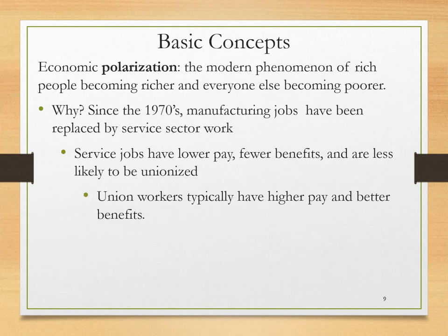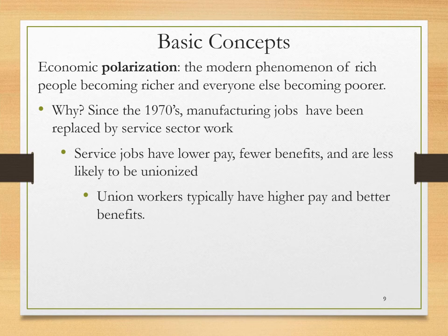Economic polarization is the modern phenomenon of rich people becoming richer and everyone else becoming poorer. This was addressed by Marx in the mid-1800s, but we have seen this process get stronger since the 1970s. Since then, manufacturing jobs in the United States have been increasingly replaced by service sector work, which has lower pay, fewer benefits, and is less likely to be unionized. Union workers typically have higher pay and better benefits, so union membership confers some class advantage.